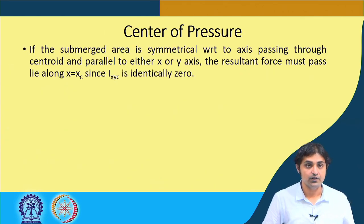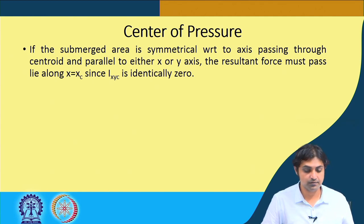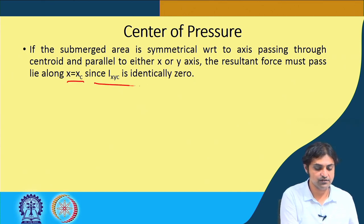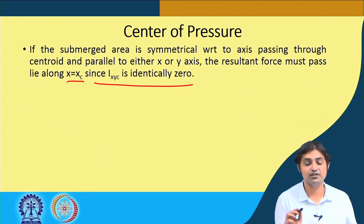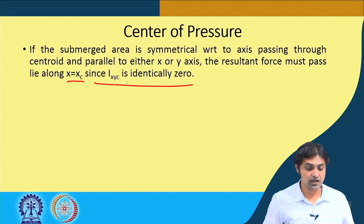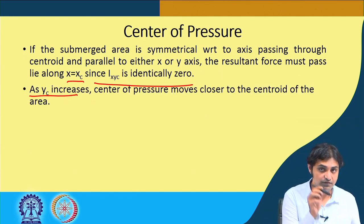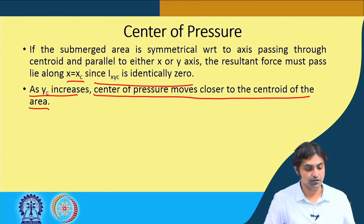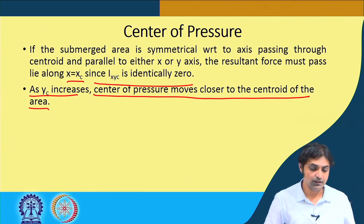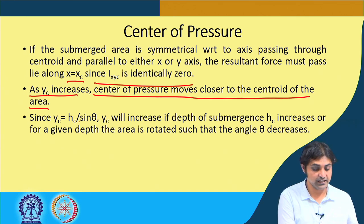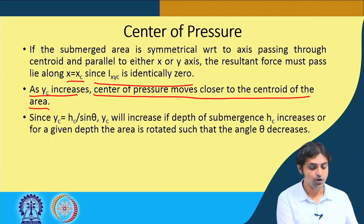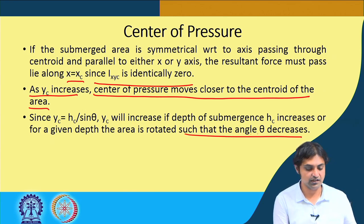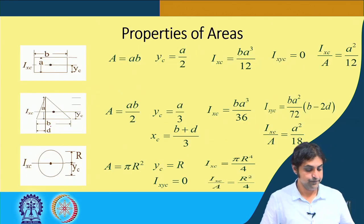If the submerged area is symmetrical with respect to an axis passing through the centroid and parallel to either x or y axis, then Ixyc is identically 0, so xr equals xc. As yc increases — meaning the centroid goes deeper — the center of pressure moves closer to the centroid. Since yc equals hc divided by sinθ, yc increases if depth hc increases or if angle θ decreases.